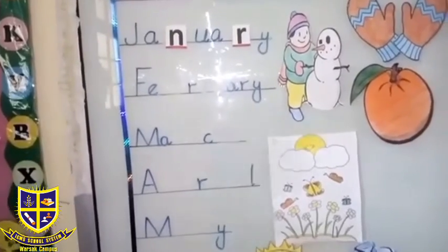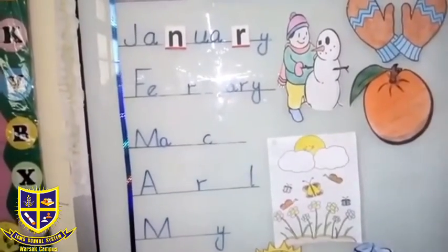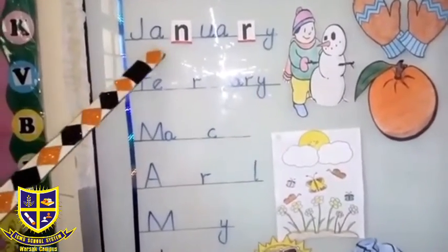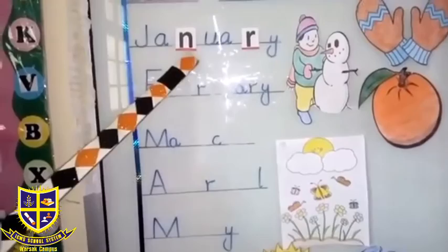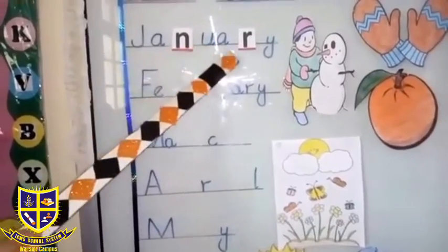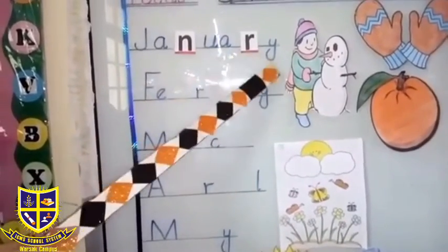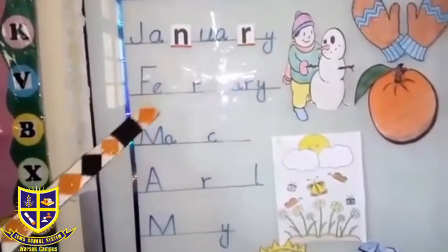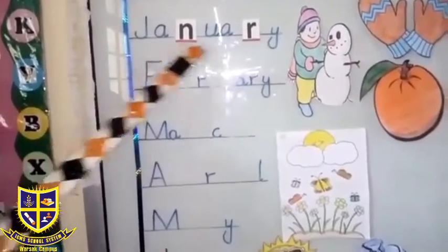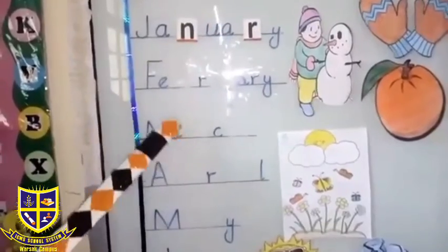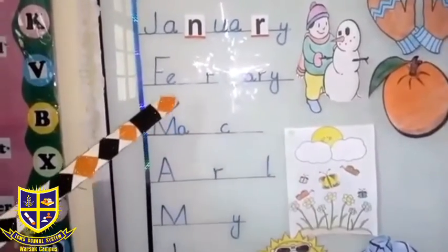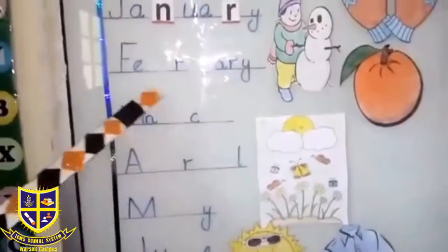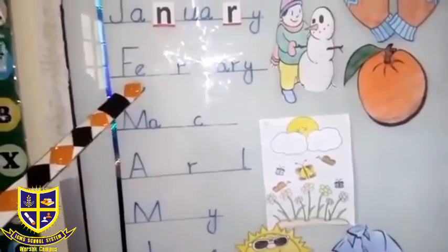Now we have the month name complete. Let us read it: J-A-N-U-A-R-Y — January. Now we have February. February.